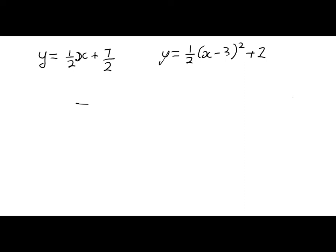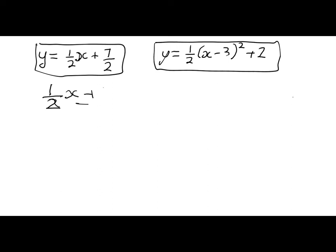Now we know that they meet in two places. One of those places is where x equals 1. How can I find the other one? Well, I know that y must be the same if they're meeting, right? So we can equate the right-hand side of the two equations. So we've got 1 half x plus 7 over 2 is equal to x minus 3 squared plus 2.